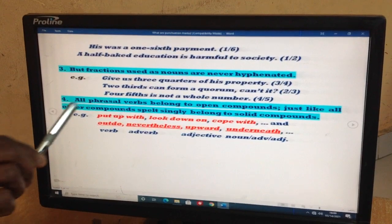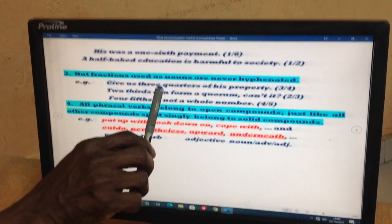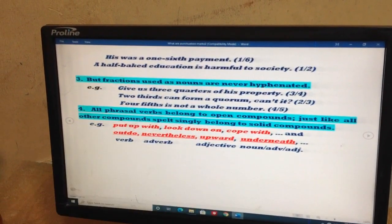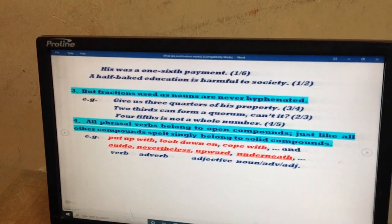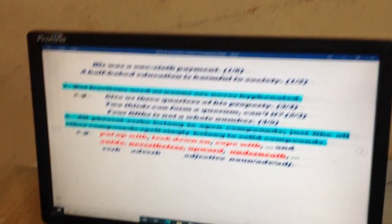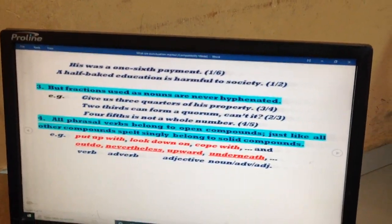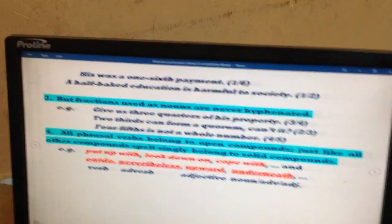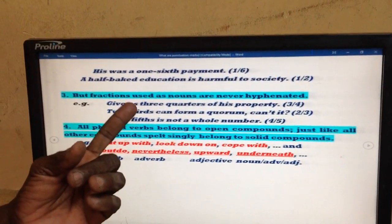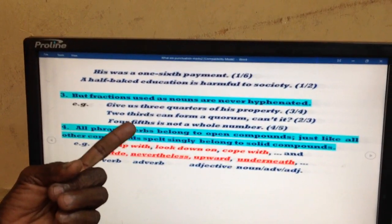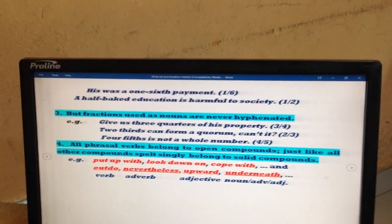Now, the same fraction used as nouns, as you can see, have no hyphens in them. Rich people always travel first class. No hyphen. This is a first-class compartment. Adjective first class must be hyphenated. And so on and so forth. So here we don't need hyphens because they are all nouns, naming words.